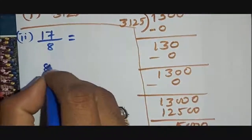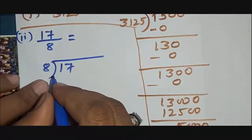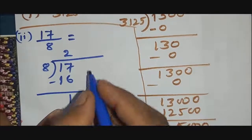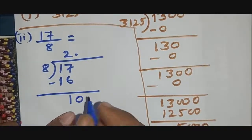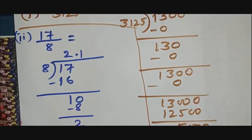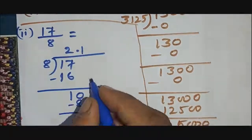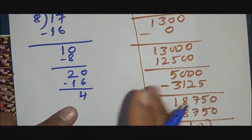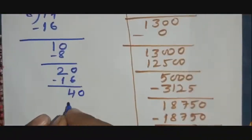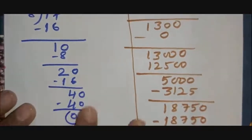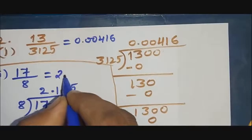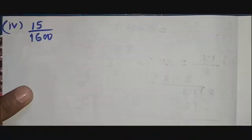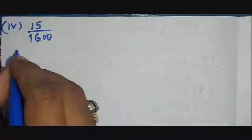17 divided by 8: 8×2=16, remainder 1; after decimal take 0, 8×2=16, remainder 4; then 8×5=40, remainder 0. So 17/8 = 2.125.